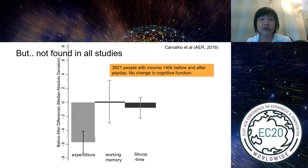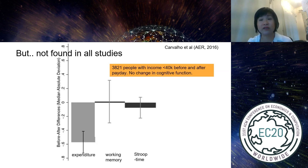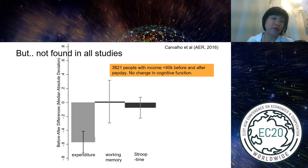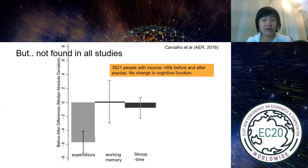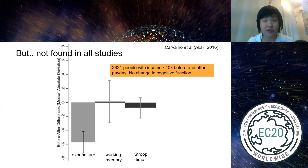In that study, 3,800 low-income people were split: half surveyed before payday and half after. Expenditures were lower before payday, confirming financial constraint. After payday, people spent more and presumably reduced stress — but working memory and Stroop test times showed no significant difference. So this remains open research.